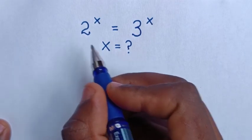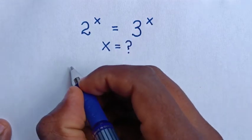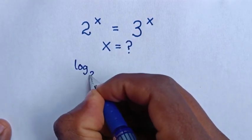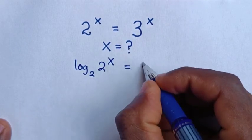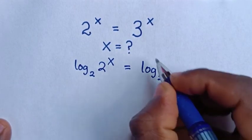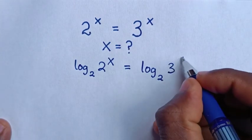So first we'll apply log of base 2 to both sides. Then it will be log of base 2 of 2 power x is equal to log of base 2 of 3 power x.